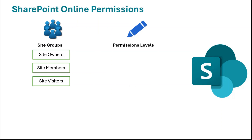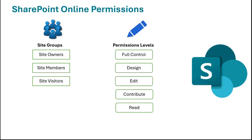Then we have permission levels. Permission levels are a collection of permissions that decide what exactly a user can do with a particular permission. There are five standard permission levels: full control, design, edit, contribute, and read.